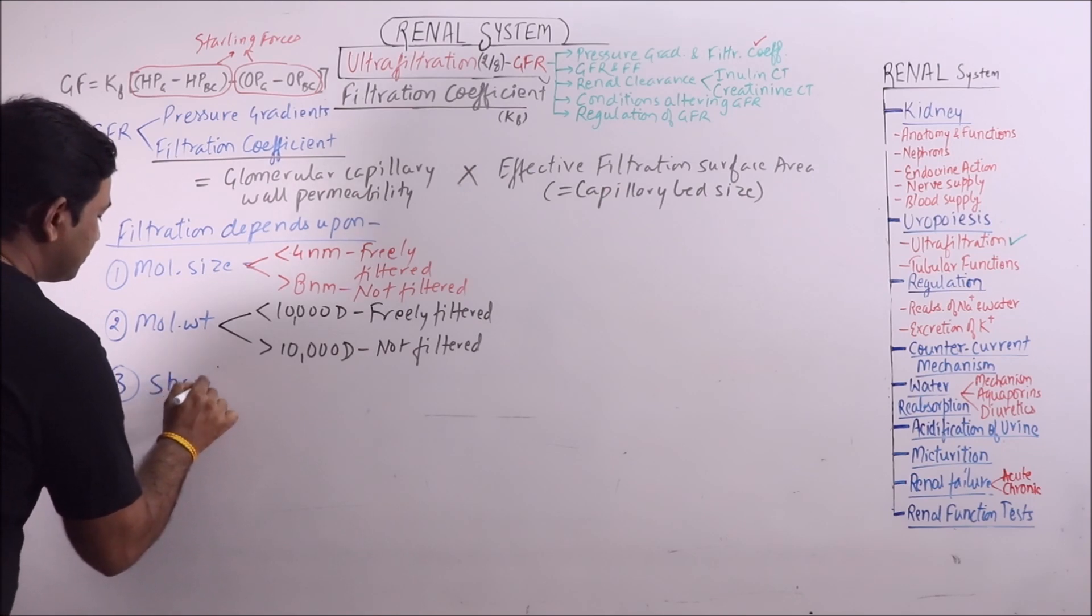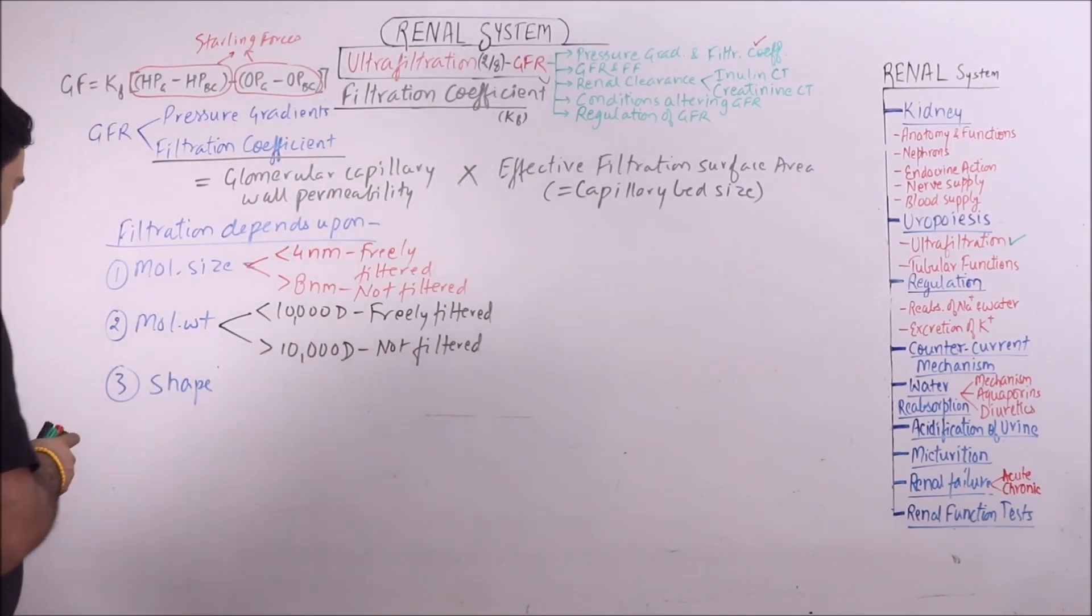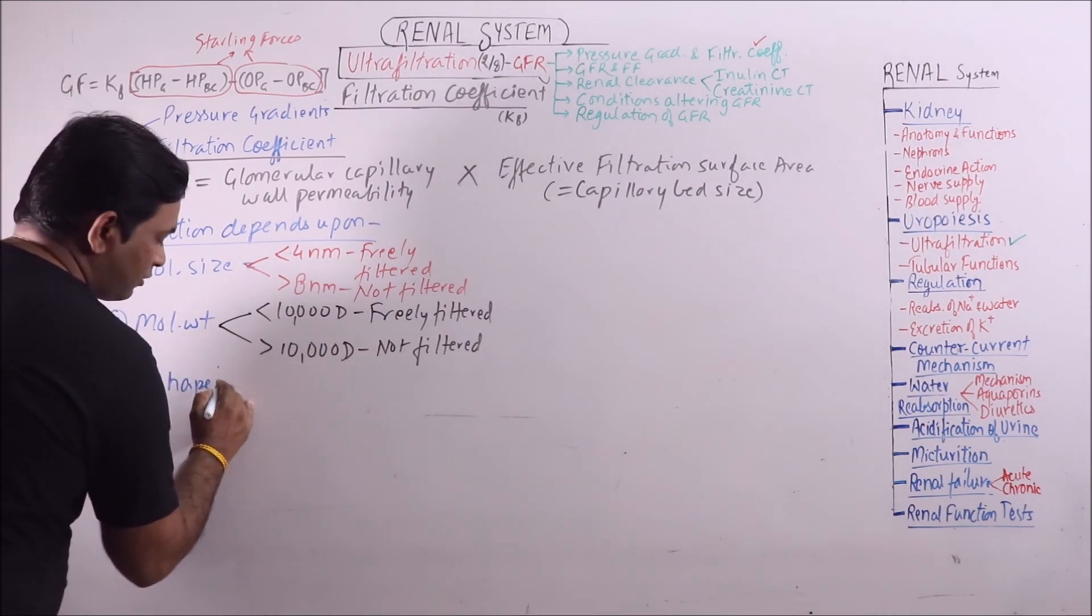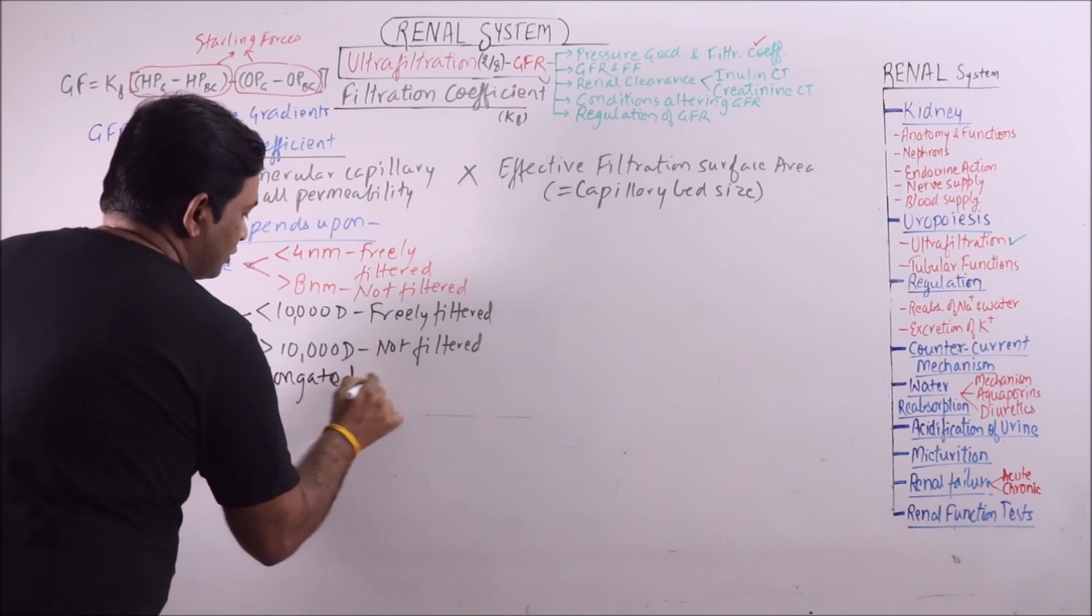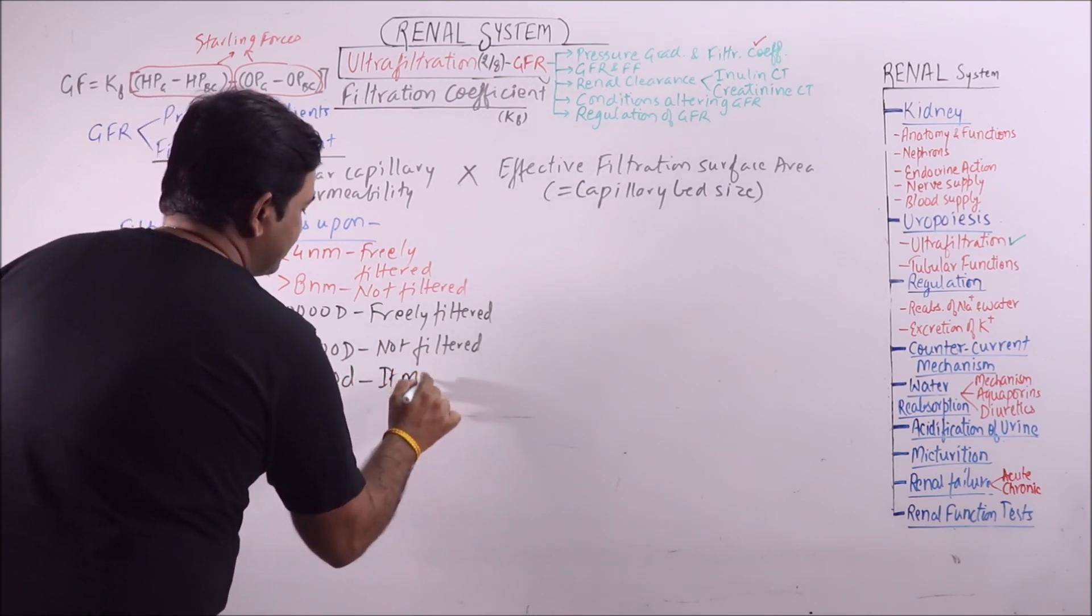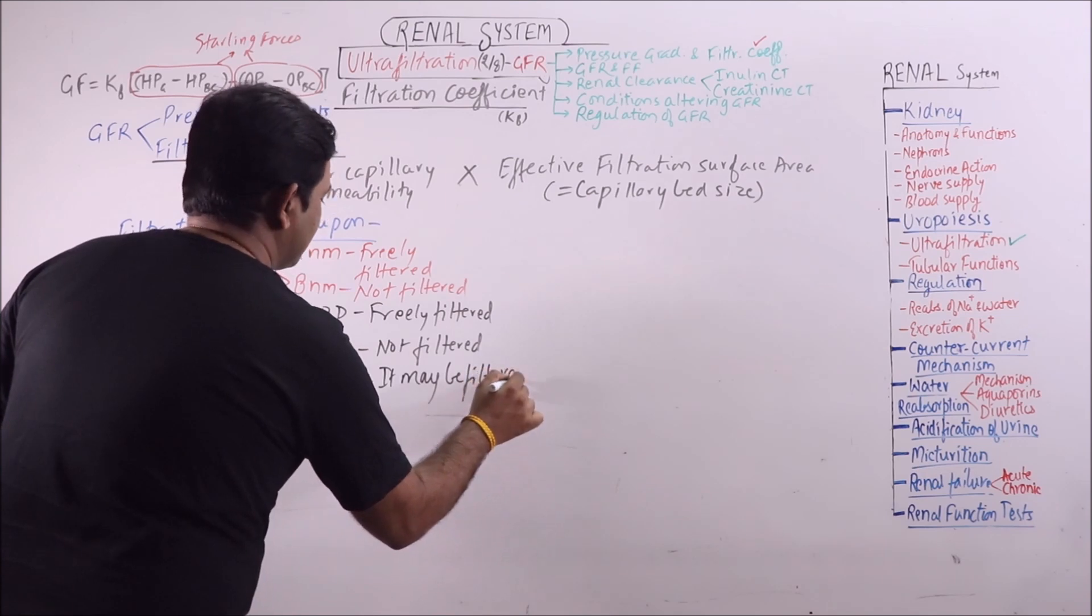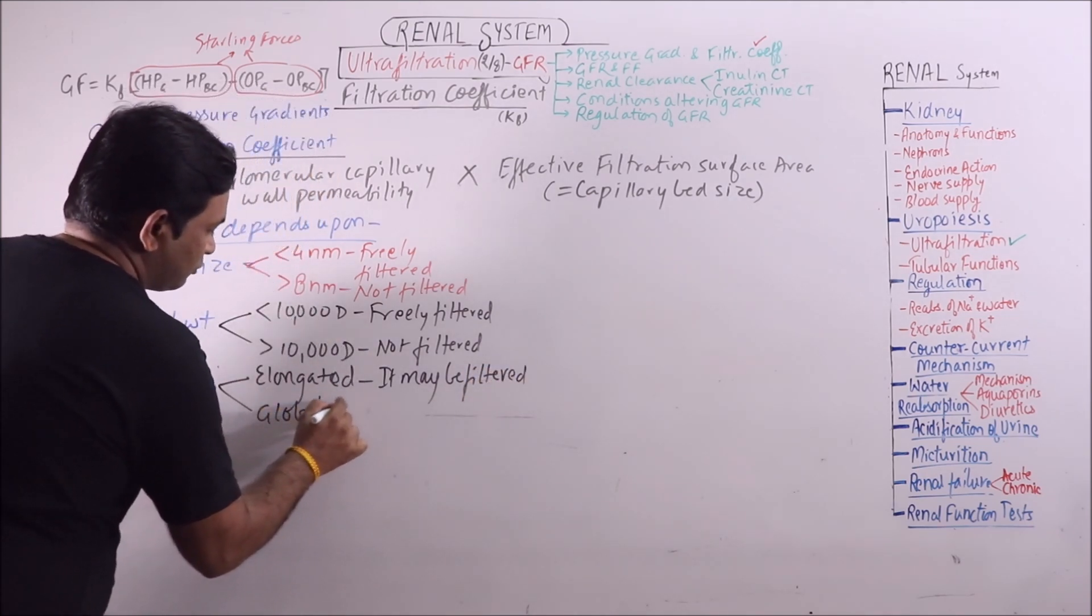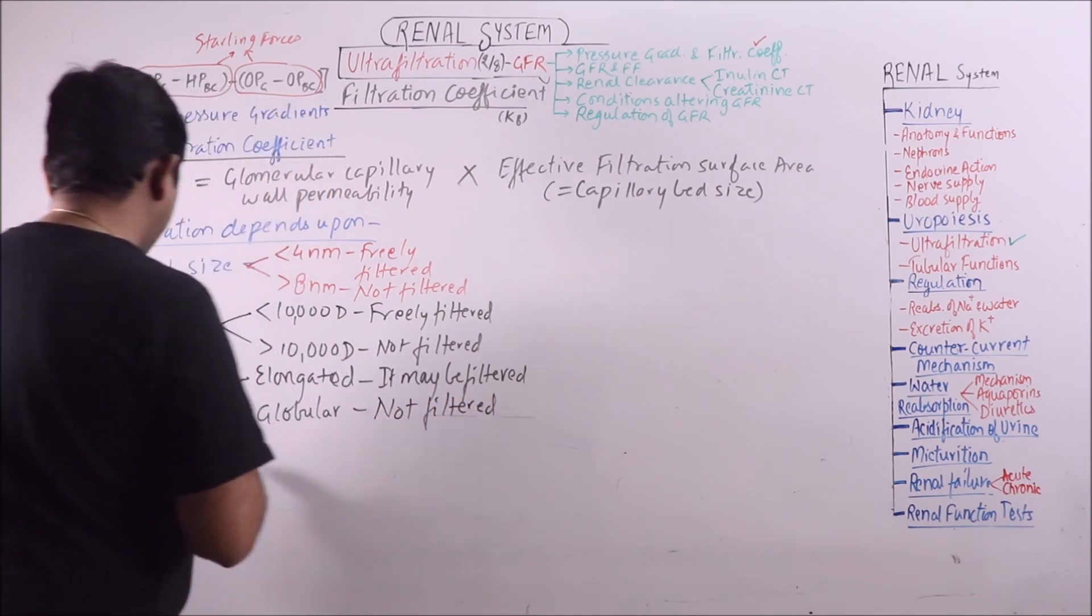Then shape. If a particular molecule has large molecular weight and its shape is elongated, then also it may be filtered. But if it is globular with high molecular weight, it is not filtered.